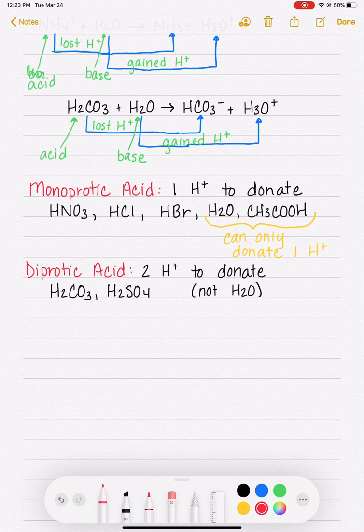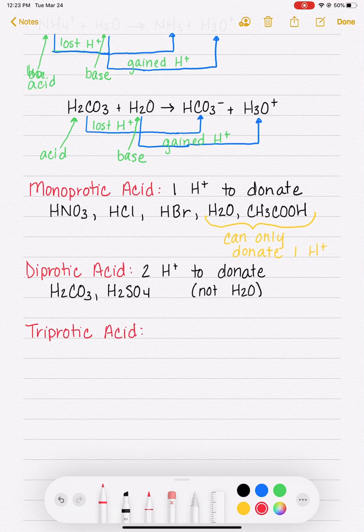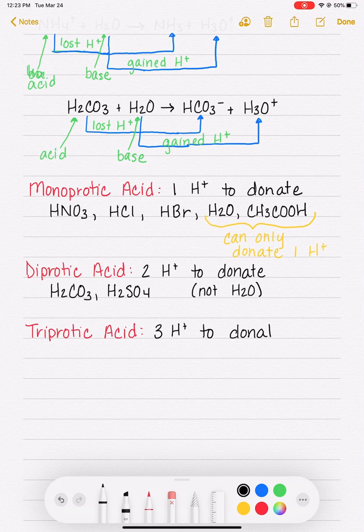And then last but not least, we do have some acids that are triprotic, which would mean, as you can imagine, that they are going to have three hydrogens to donate. There aren't as many of these guys, but the most common example is H3PO4.